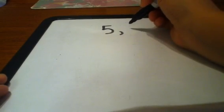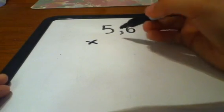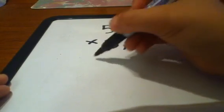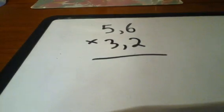Hi everyone, now I'm going to show you how to do a multiplication with a decimal. Let's say I've got 5.6 times 3.2. I'm going to show you how to do it.